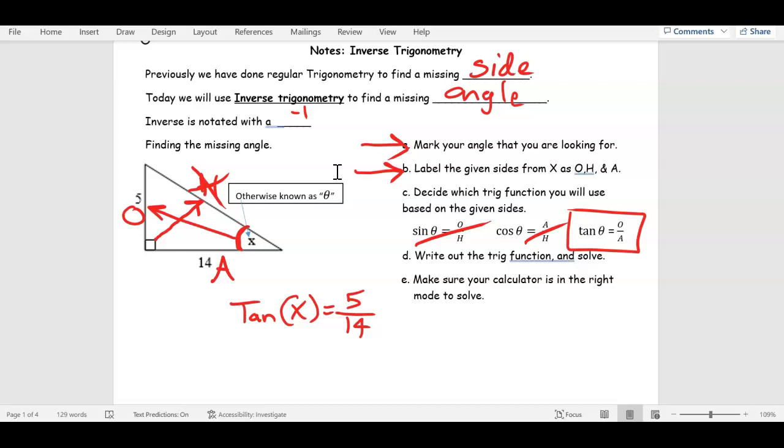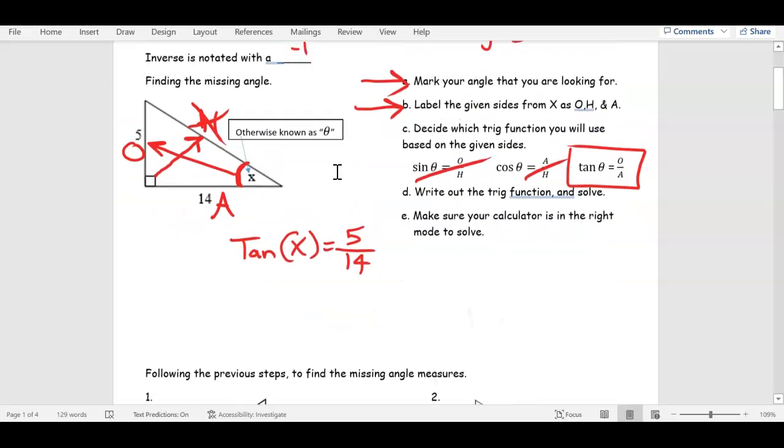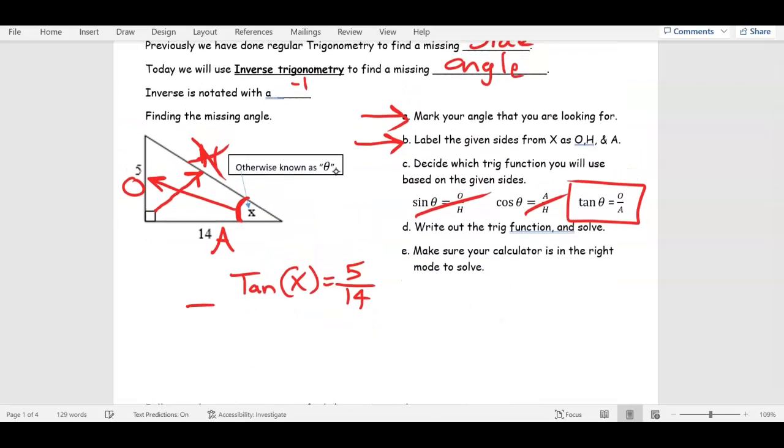Now, I'm going to write out the long way first, and then I'll show you a shortcut notation, okay? But, what I'm going to do, on each side, I'm going to put tan inverse, with a little negative one. So, here's how it's going to look. Tan inverse of tan X equals tan inverse of 5 over 14. All I did was add tan inverse on both sides, on the left and on the right.